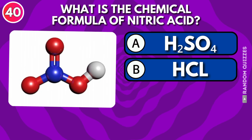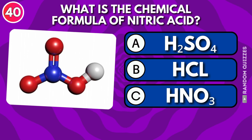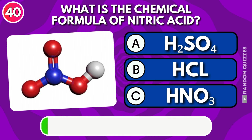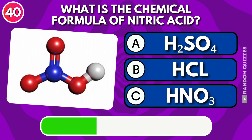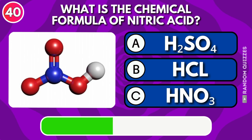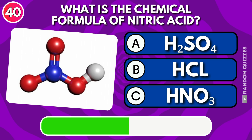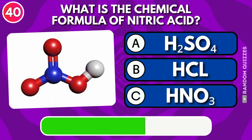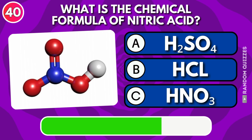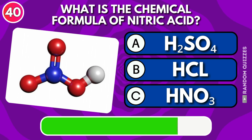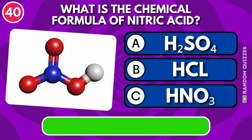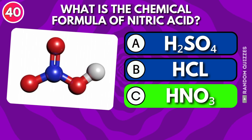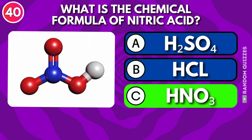What is the chemical formula of nitric acid: hydrogen sulfate, HCl, or hydrogen nitrate? Answer: Hydrogen nitrate (HNO3).